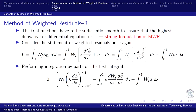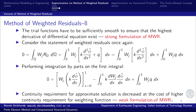In the strong form, the unknown approximate solution had to have continuity of at least twice differentiation. In the weak form, the continuity requirement is reduced by one order, at the cost of increasing the continuity requirement on the weighting function.